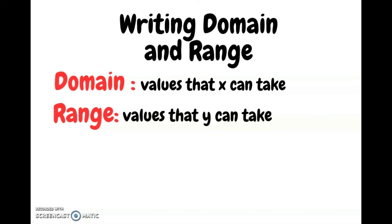Now that we've gone through what a function is and the methods to determine if a relation is a function, let's go through how we write the domain and range of a function. If you've taken Grade 11 Functions you should be familiar with this, but let's refresh. Domain represents the values that x can take in a given function, and range represents the values that y can take. If there are any restrictions or asymptotes, we must notate that when writing domain and range.